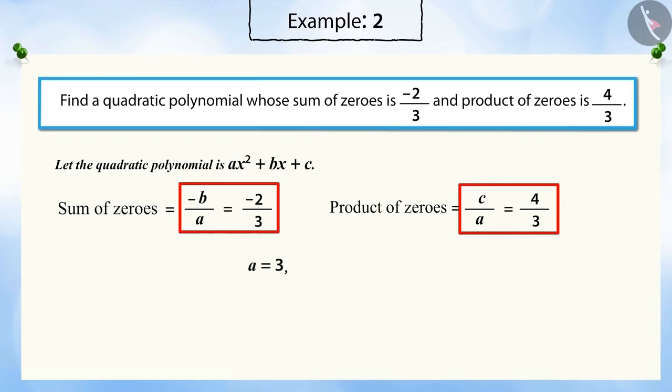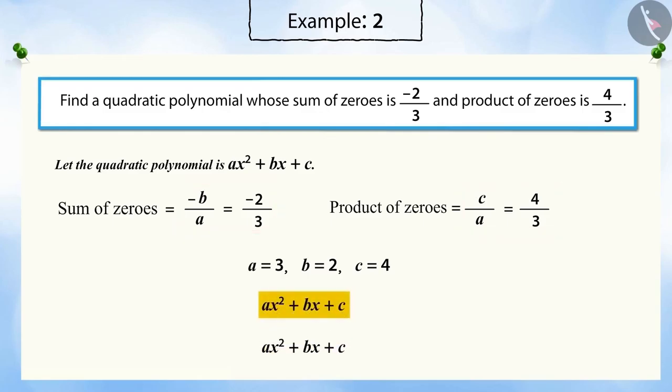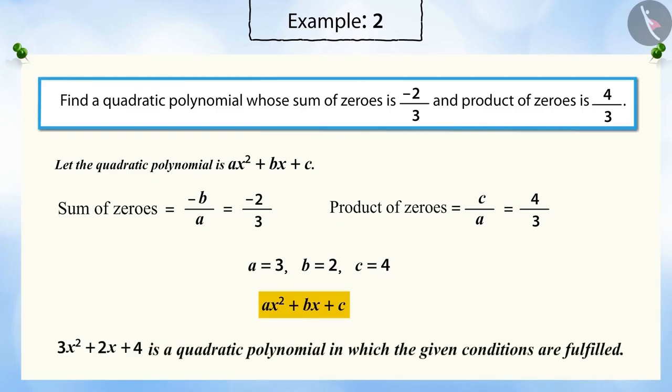When compared, a is equal to 3, b is equal to 2 and c is equal to 4. Substituting the values of a, b and c, we get a quadratic polynomial 3x squared plus 2x plus 4 where we get a quadratic polynomial in which the given conditions are fulfilled.